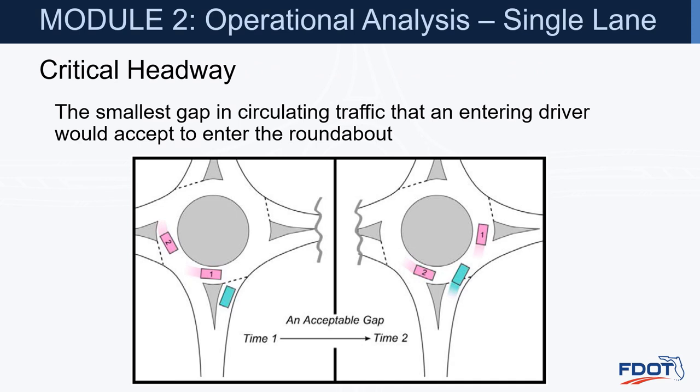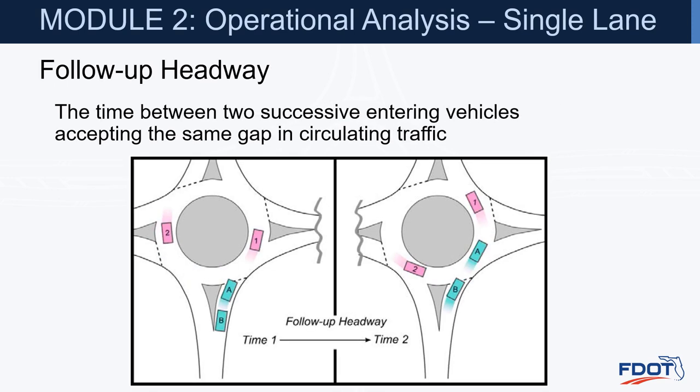Critical headway, also referred to as critical gap, is the smallest gap in circulating traffic that an entering driver would accept to enter the roundabout. Vehicles one and two are circulating, and the green vehicle determines whether there is a large enough gap between those two vehicles to enter safely — that is your critical headway. Follow-up headway is the time between two successive entering vehicles accepting the same gap in circulating traffic — what headway does vehicle B need to follow vehicle A and also enter the roundabout.